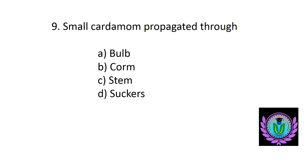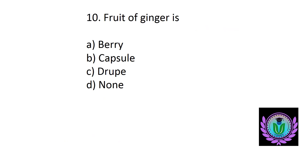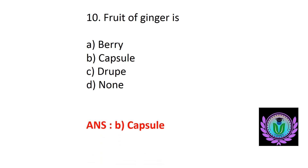Small cardamom is propagated through — option A: bulb, B: corm, C: stem, D: suckers. The answer is option D, suckers. Fruit of ginger is — option A: berry, B: capsule, C: drupe, D: none of the above. The answer is option B, capsule. That's all, thank you.